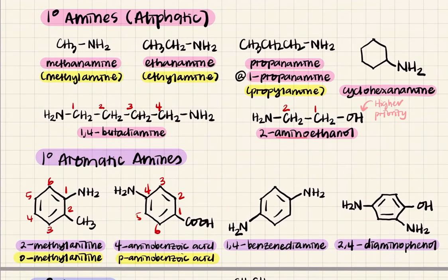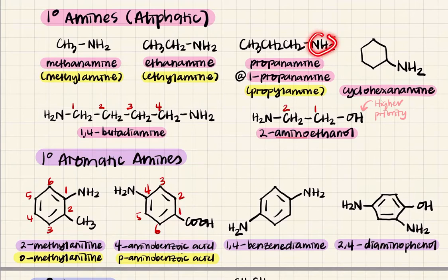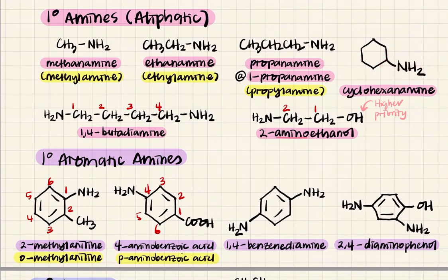For primary aliphatic amines, it follows the number of carbons as usual — straight chain or branched. So you have methanamine, ethanamine, propanamine. If the amino group is on the second carbon, it will be 2-propanamine. For a cyclic compound — if there's no amino group it's cyclohexane; with one, it becomes cyclohexanamine.